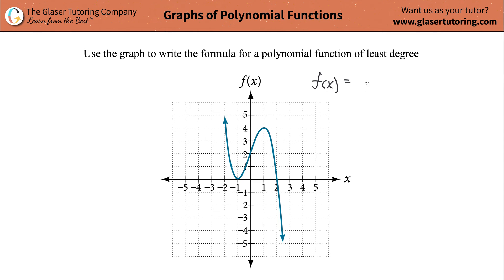f of x will equal some leading coefficient c multiplied by some factors, and we'll write x plus or minus a, x plus or minus b, and then x plus or minus c dot dot dot. We might have several of these factors. We might have two of them, we might have three of them, we might have four. I mean, it all depends.